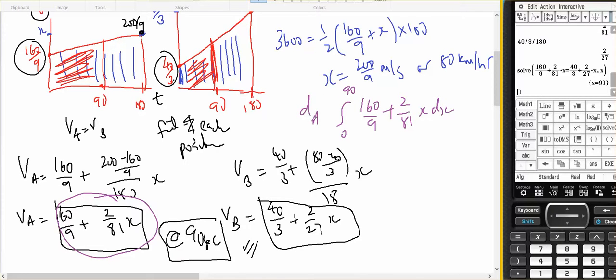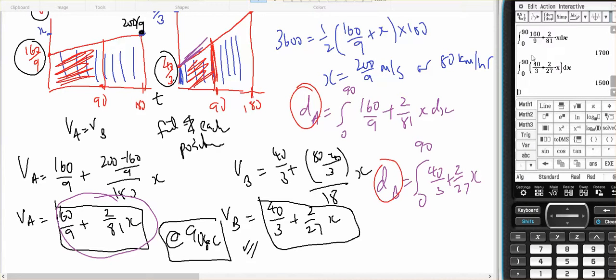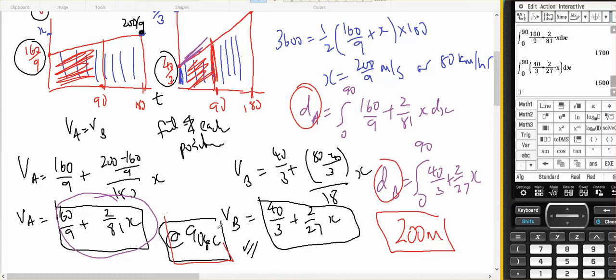and that would be the distance that A has travelled, and the distance that B has travelled is 0 to 90 of this equation, which is 40 on 3, plus 2 on 27, X, and I'm going to subtract the difference between those distances. And I can see that car A has travelled 1,700, and B has travelled 1,500. So the distance between the two cars is 200 metres, and that will be at 90 seconds, and that's when both cars are travelling at the same speed, but obviously in different locations.